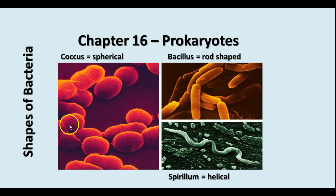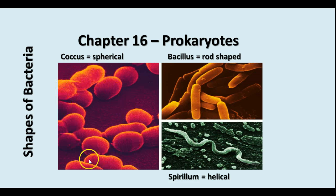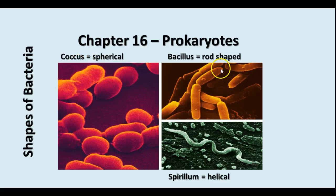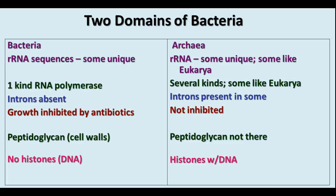This slide shows pictures of bacteria — the three different main bacterial shapes: the coccus, or the spherical bacterium; the bacillus, which is rod-shaped; and the spirellum, which is helical or spiral-shaped.